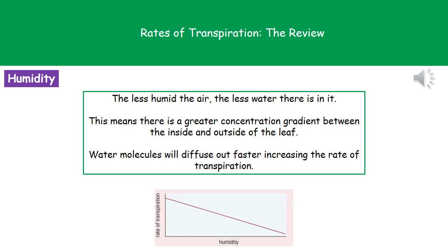Finally, if we consider humidity — the amount of moisture present in the air — if we've got less humid air, that means there's only a small amount of water in the air around our plants. That means we're going to have a bigger difference between the amount of water inside our plant and the amount of water in the air, and therefore a greater concentration gradient, meaning we will see more rapid diffusion and therefore more rapid transpiration.